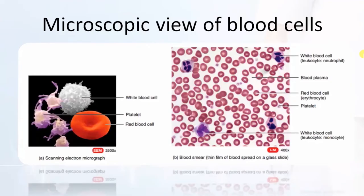Now the microscopic view of blood cells can be seen from scanning electron microscopes and light microscopes. In this image, the white blood cell — that is the leukocyte neutrophil — is there. This one is the blood plasma, and this one is the red blood cells, that is the erythrocyte. This is the platelet and this is the monocyte.